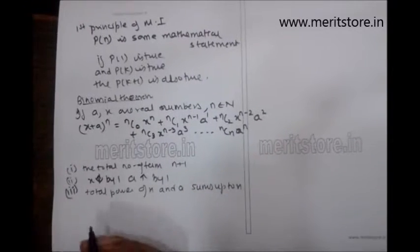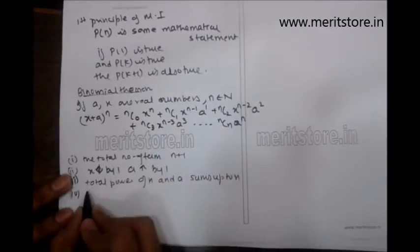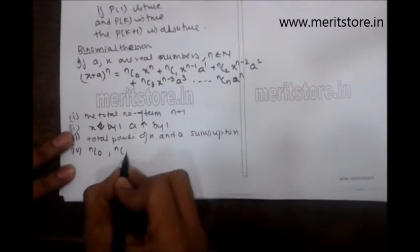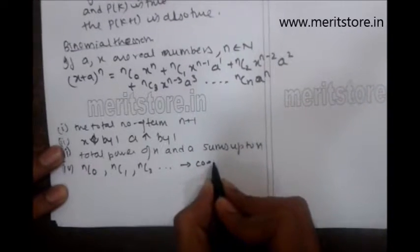The last point would be the terms nc0, nc1, nc2 - these terms are called coefficients.